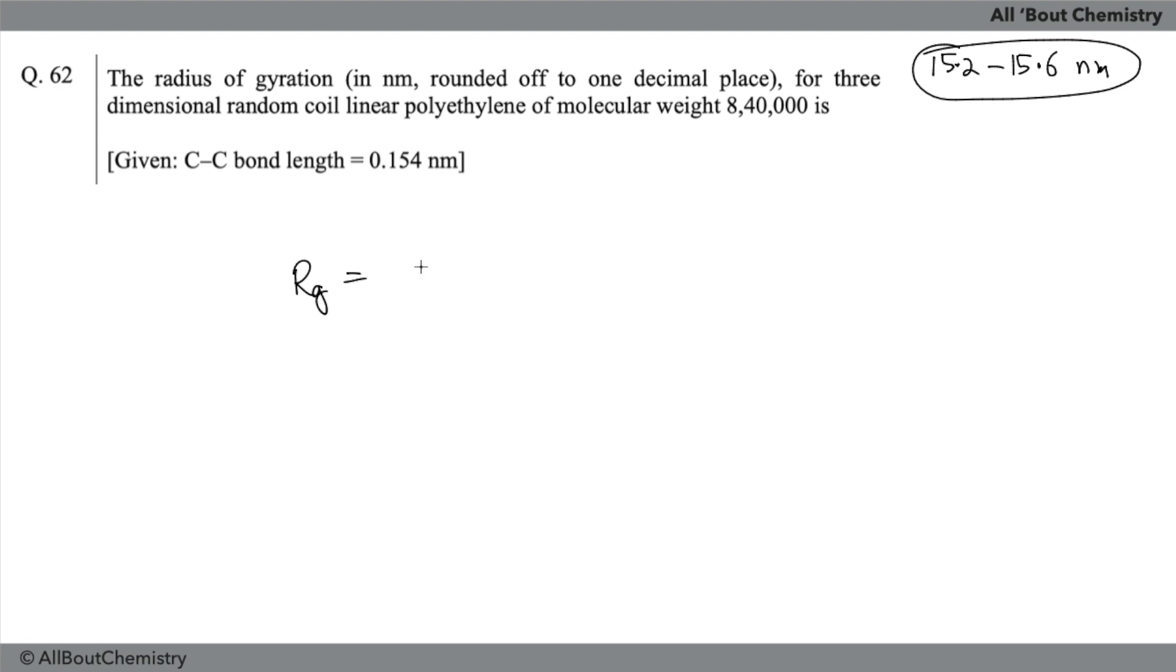This has to be equal to Rg = √(n × l) / √6. That has to be the formula, and it can be small l, you can denote it by small l as well. What is n? So n is basically number of bonds. That is where most of you are doing mistakes.